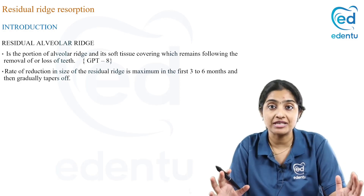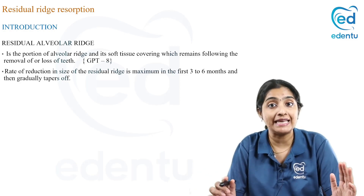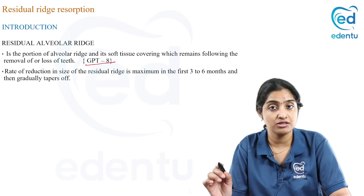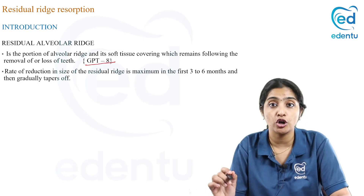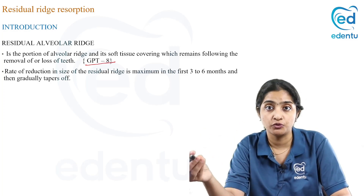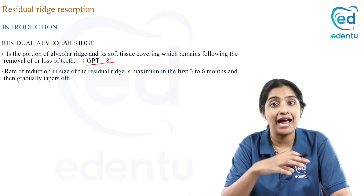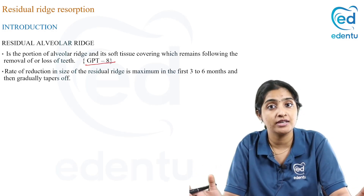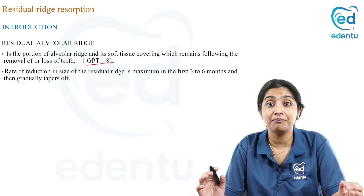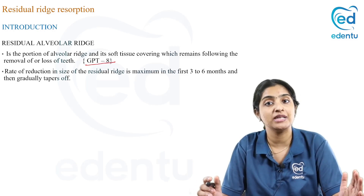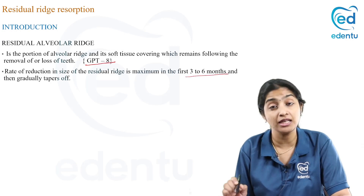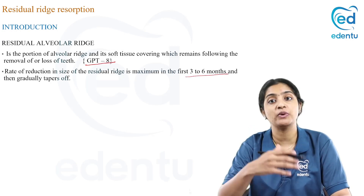Coming to the introduction — what is residual ridge resorption? According to GPT-8, the definition is: the portion of alveolar ridge and its soft tissue covering which remains following the removal or loss of teeth. The rate of reduction in the size of the residual ridge is maximum in the first three to six months and then gradually tapers off. This significance will be addressed when we discuss the consequences.